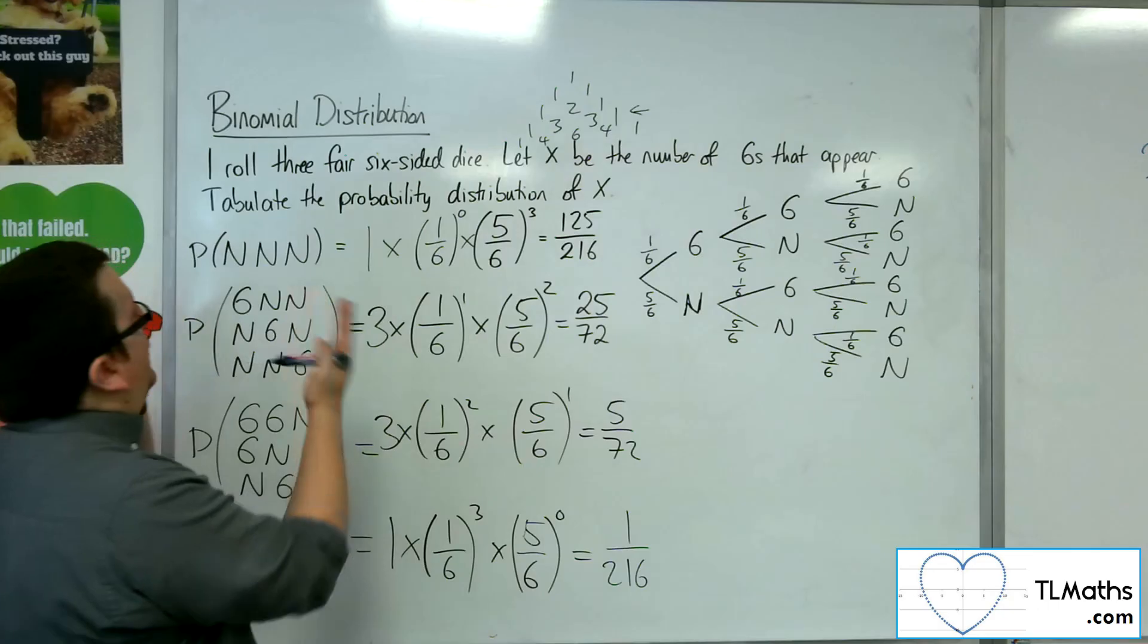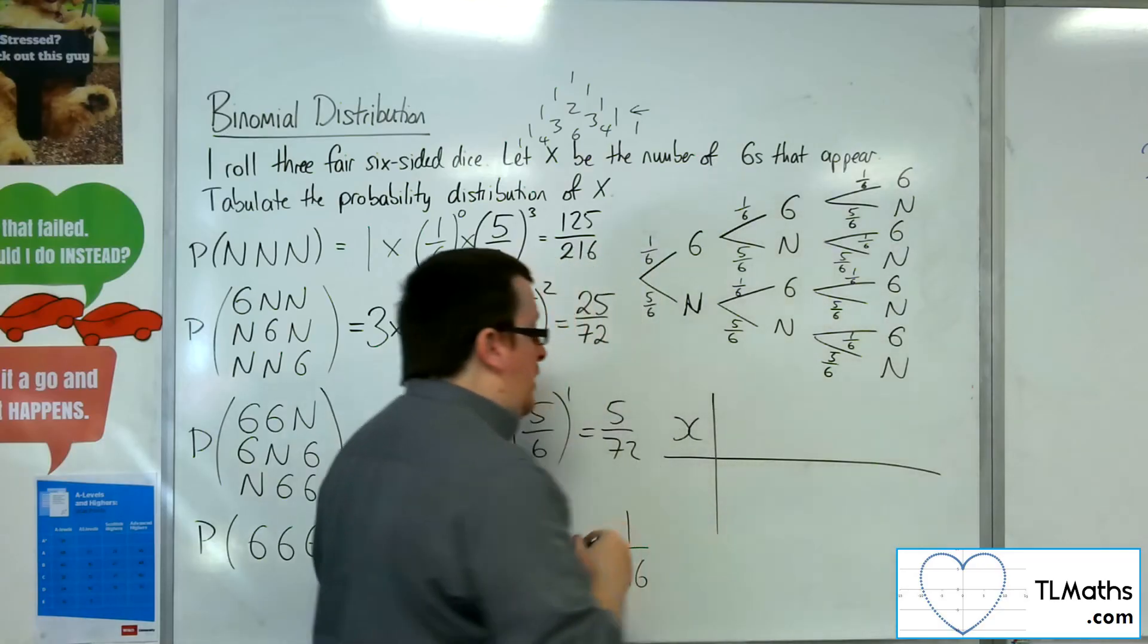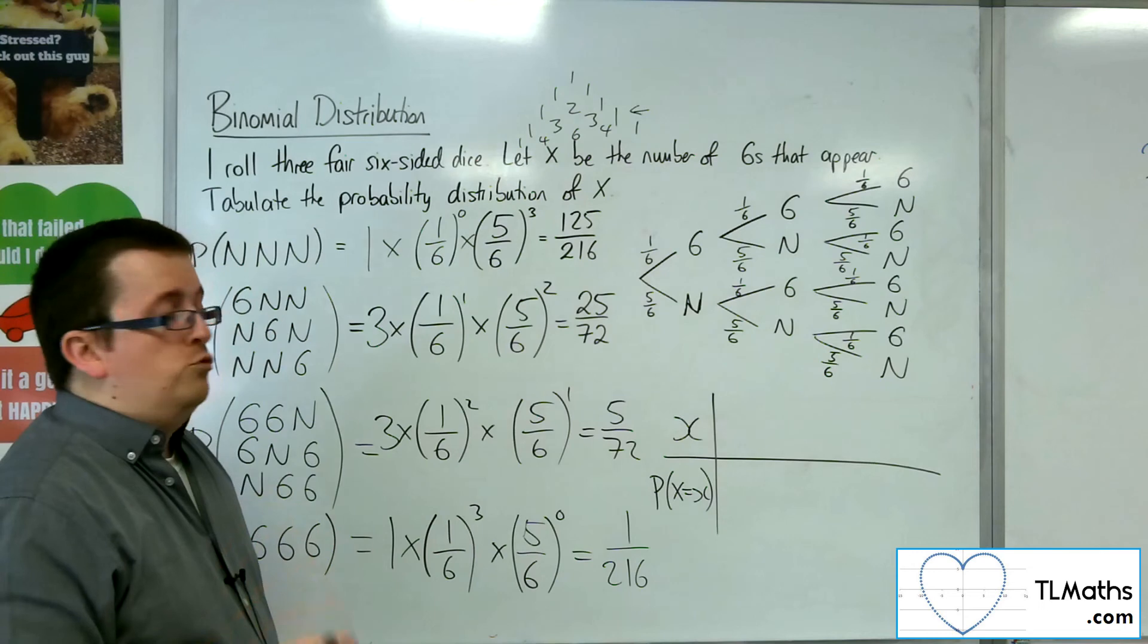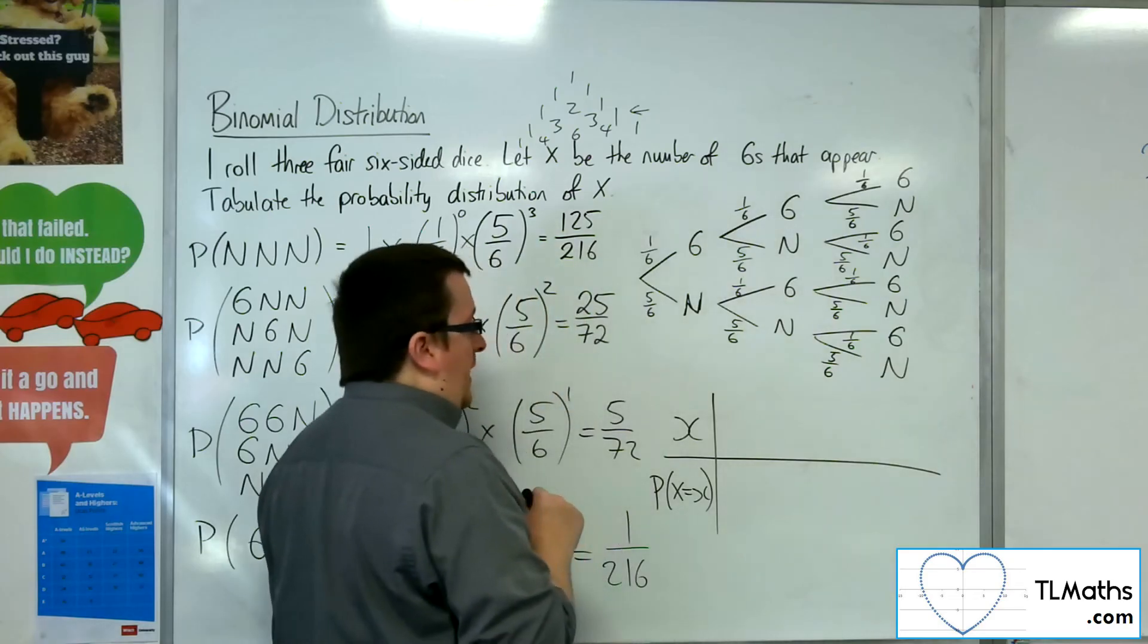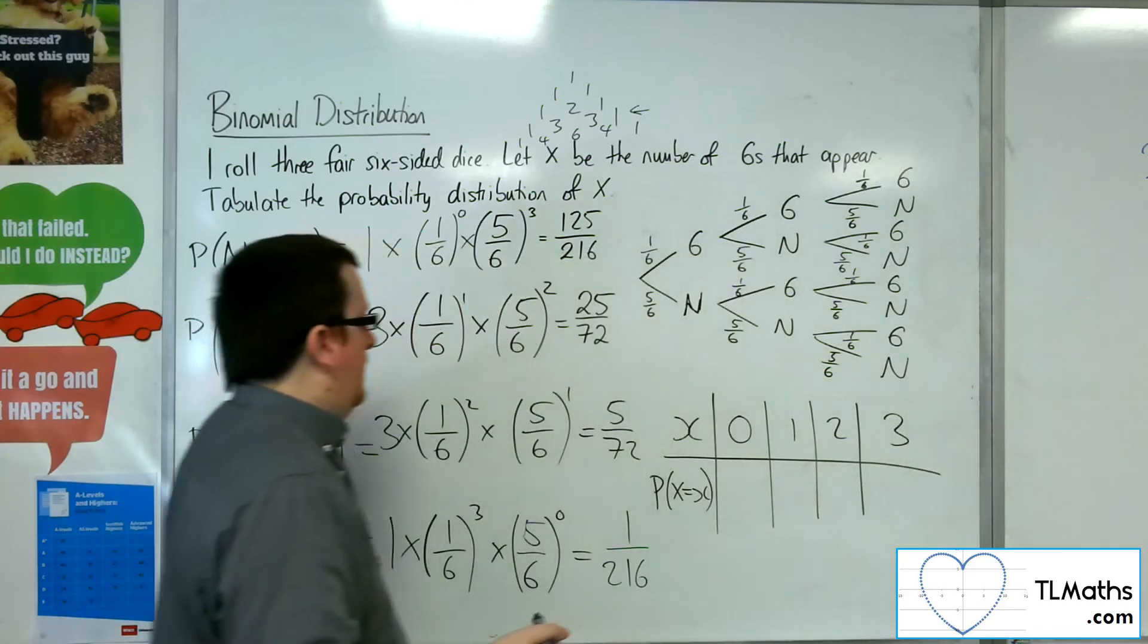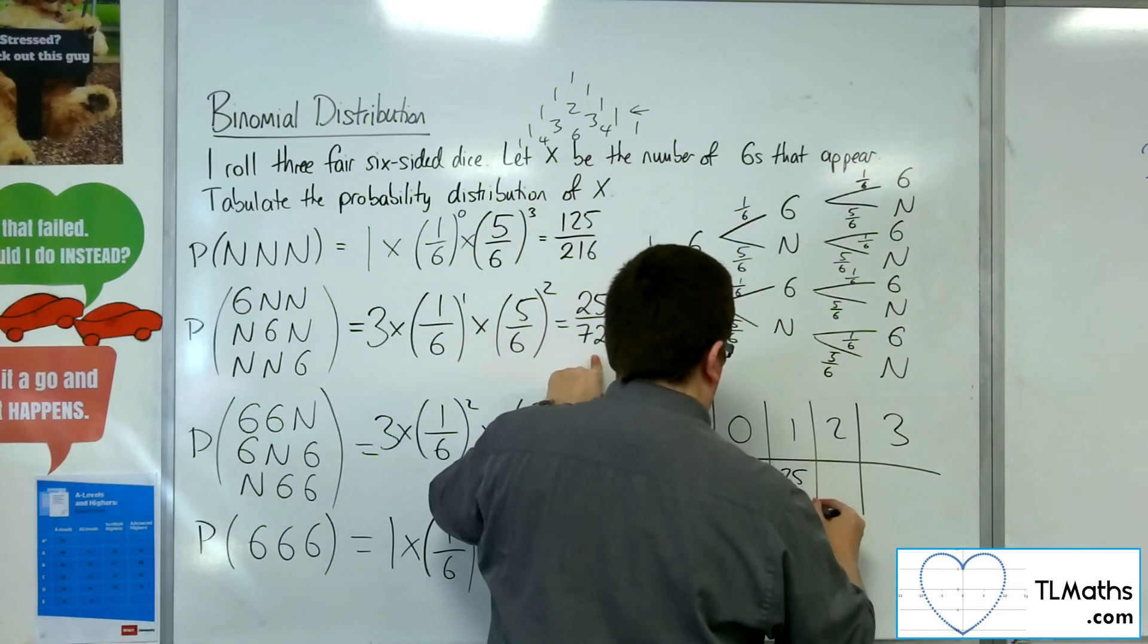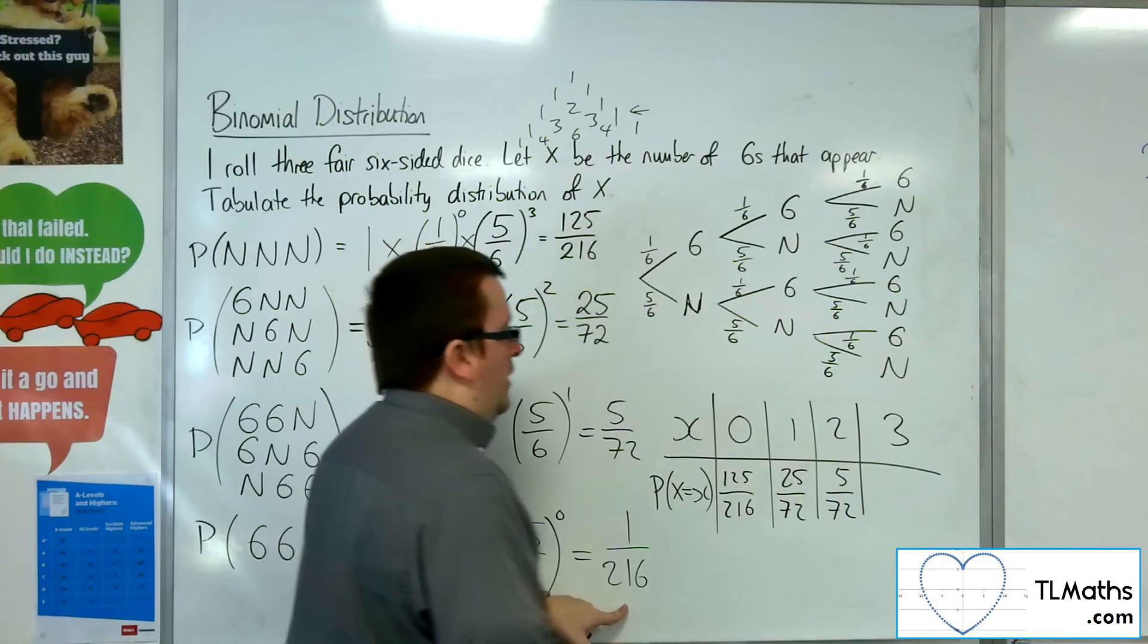So the question asks us to tabulate the probability distribution of x. So using the same notation as what we've looked at with discrete probability distributions, and this is another case of one, this is a specific type of discrete probability distribution. The x's that can be taken on here are either 0 sixes, 1 six, 2 sixes, or 3 sixes. So 0 sixes was 125 over 216, 1 six is 25 over 72, 2 sixes is 5 over 72, and 3 sixes is 1 over 216.